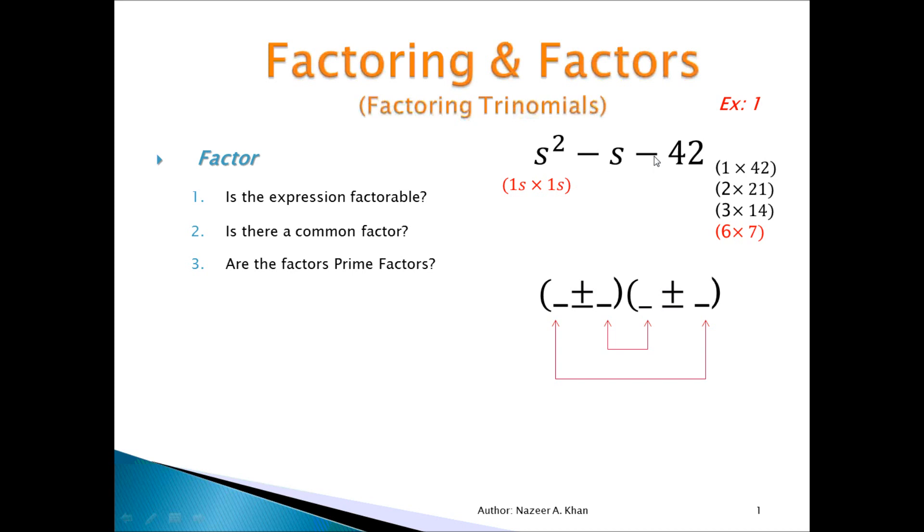Now, the thing is that we know that this sign tells us one of these will be plus and one will be minus. That represents that you're going to have to subtract the product. We know that there's only one choice for these spots. It's going to be S and S. For the second position in the binomial, we have to choose one set of these factors, and when we get the product of the inside and the outside terms, and you add them algebraically, you should have minus 1. Now, the only set of numbers here that when you subtract them will give you a 1 is this one. This set of factors, if I subtract these, I'll get 41. This one will give me 19. This one will give me 11, and this one will give me 1. So that is the set that I have to use in these positions.